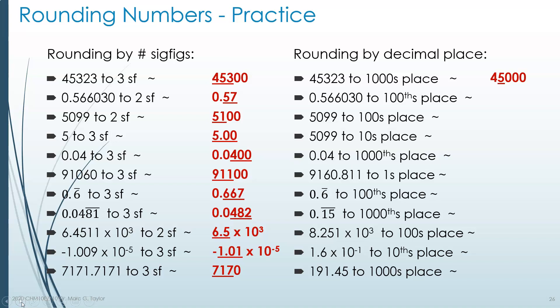Now 0.566030 to the hundredths place. The hundredths place is the second position after the decimal. We keep the 0.5 because that's the tenths place. The first 6 is the one we consider rounding, and the next 6 tells us how to round it — round it up. Rounding to the hundredths place gives 0.57. We confirm it's correct: the number is about the same as what we started with, and the last digit present is in the hundredths place.